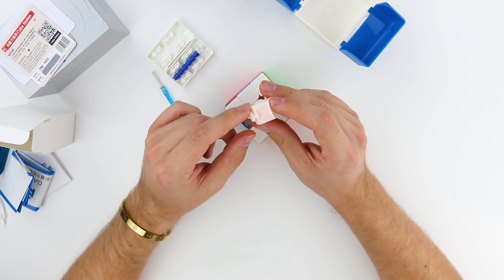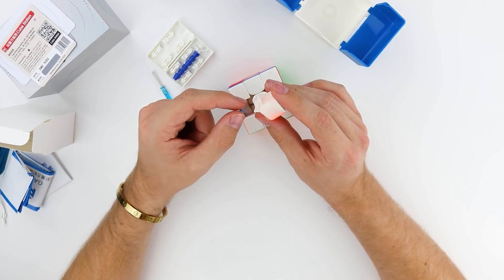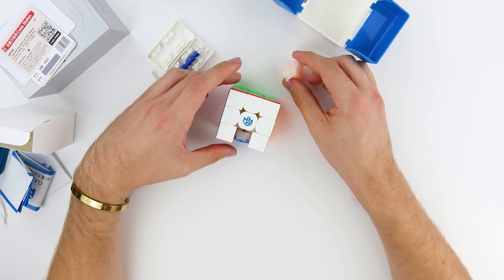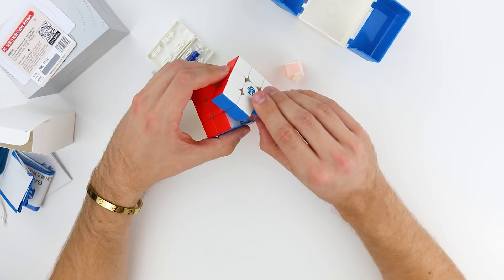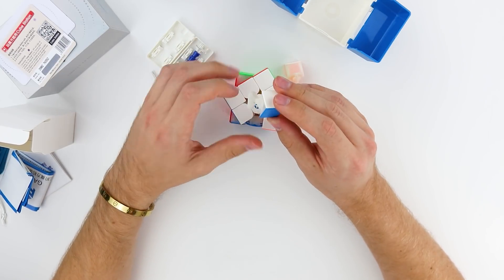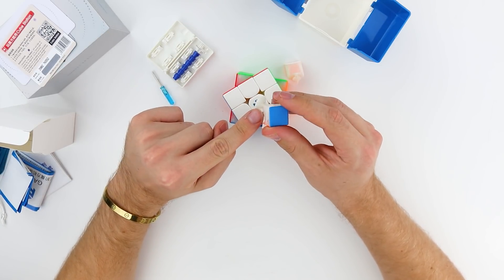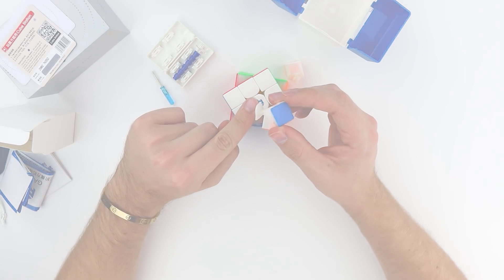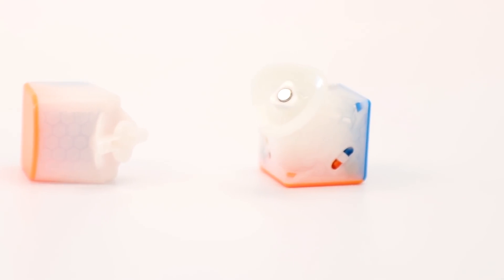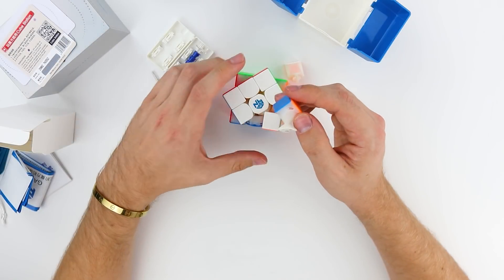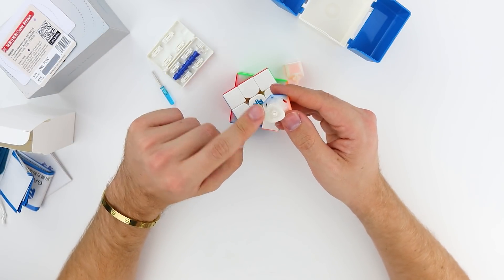Let's take a look at the mechanism. So this edge, I already noticed, we still have the honeycomb, which is GAN's staple at this point. But the edge is a lot flatter right here, I'm noticing, whereas the XS was more raised in the center. So that might be contributing to the more smooth turning feel. The corners I see have that kind of scalloped shell look on the feet, like how the monster goat cubes did. And then we do have the magnetic adjustment here in the corner piece and the corner magnet.